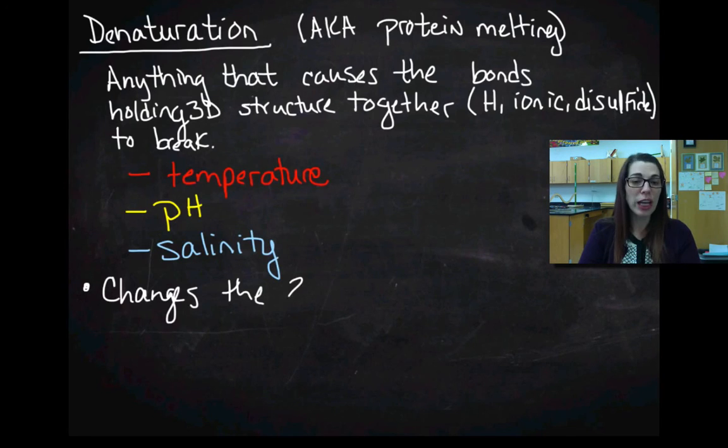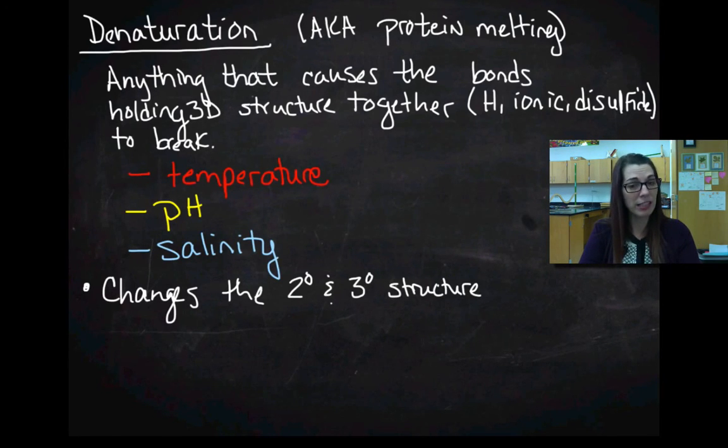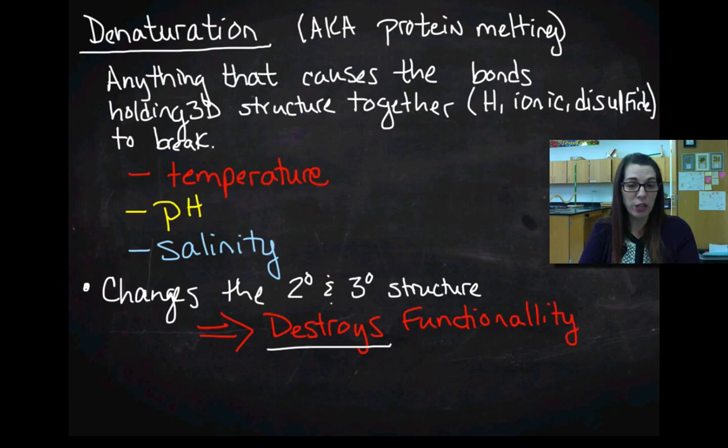And so this changes the secondary structure, which remember that's the alpha helices and beta pleated sheets, and the tertiary structure, the interactions between the R groups. It changes that structure, and therefore it destroys the function of the original protein. That original protein can no longer do its job. And that's all it means when we talk about denaturation.